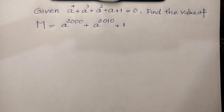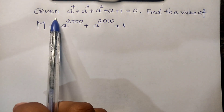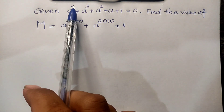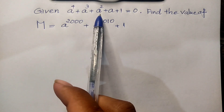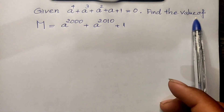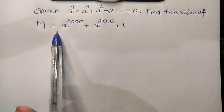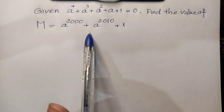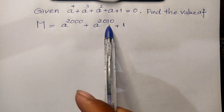Hello everyone, welcome to my YouTube channel. Today I have this exercise on paper: given a⁴ + a³ + a² + a + 1 = 0, find the values of the expression m = a^2000 + a^2010 + 1.